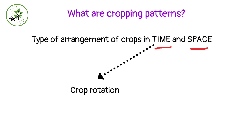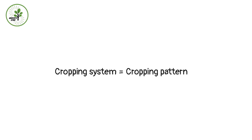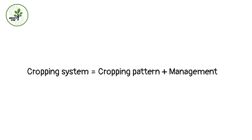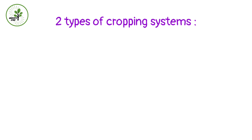Arrangement of crops with respect to space — arranging crops in a given area. We can say intercropping is a cropping pattern where different crops are arranged on the same land. Now, what are cropping systems? Cropping system is nothing but cropping pattern plus management. Management may differ in various places, so cropping systems are location specific.